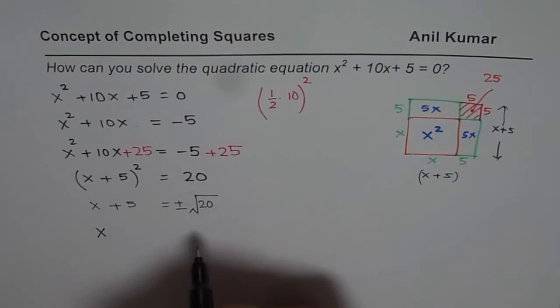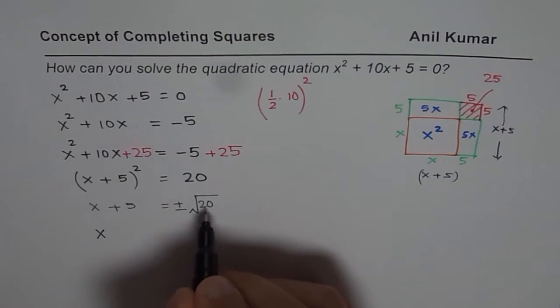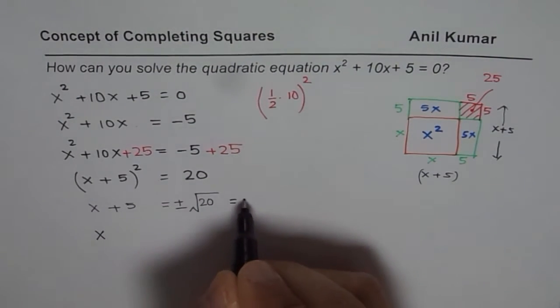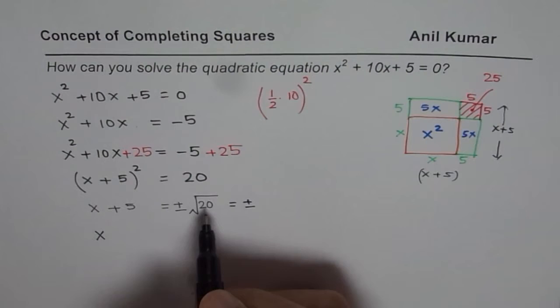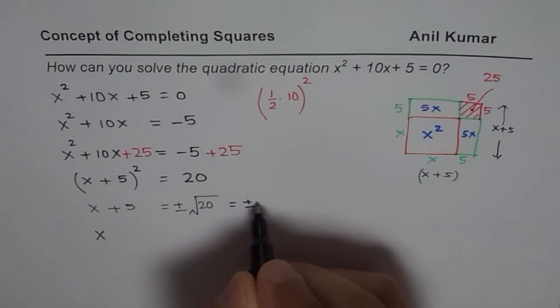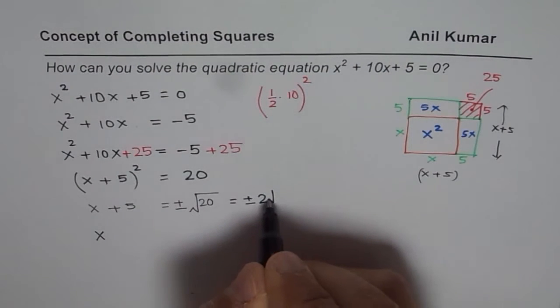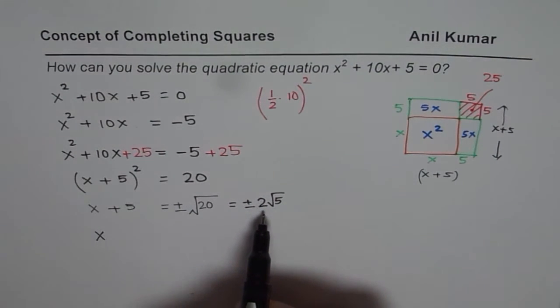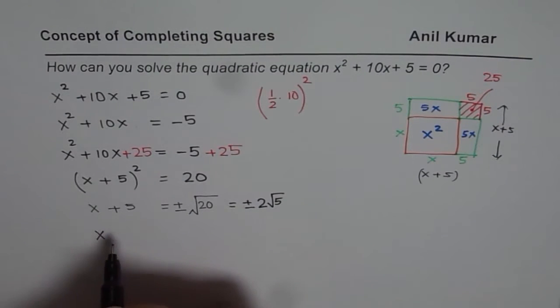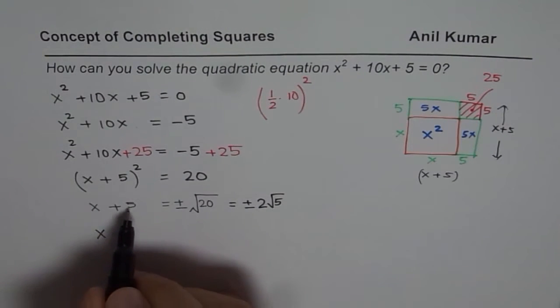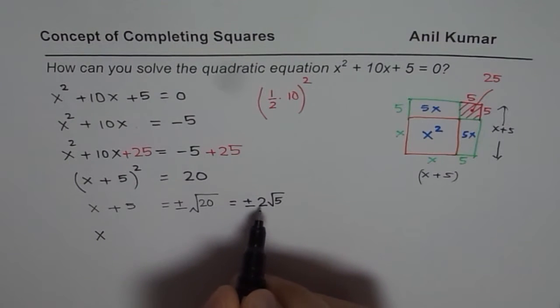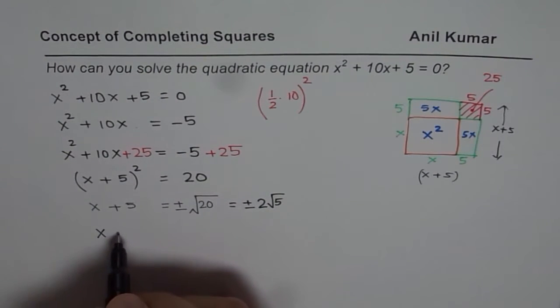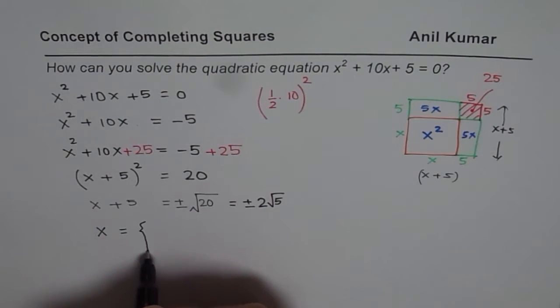We can write √20 as √(4 × 5), and √4 = 2, so this is 2√5 if you want the exact value. So x + 5 = ±2√5, meaning x equals two values.